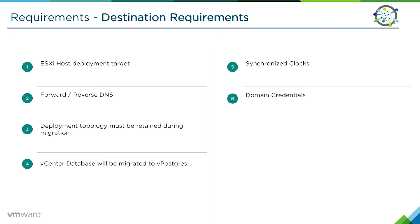Forward and reverse DNS is also applicable for the destination. The deployment topology is going to be retained when doing the migration. For example, if you're running a vCenter with an external PSE on Windows, your appliance topology is going to be the exact same — a vCenter server appliance with an external PSE appliance. The topology can't be changed during the migration.